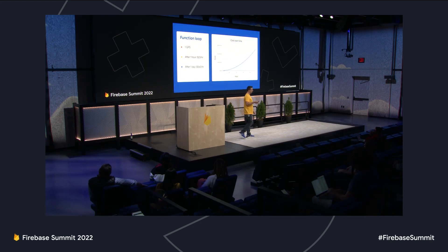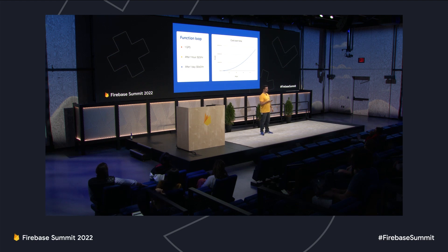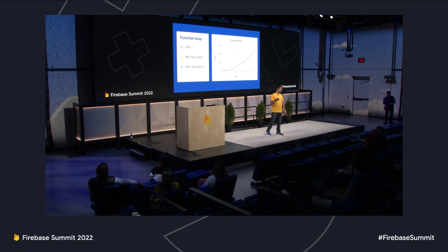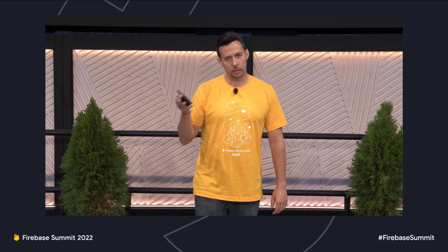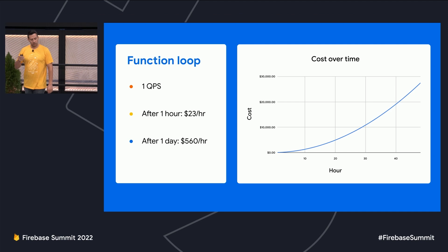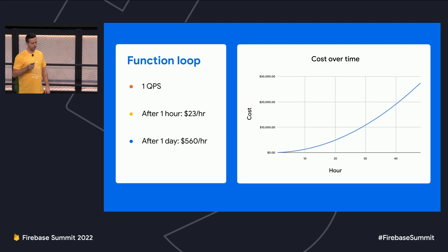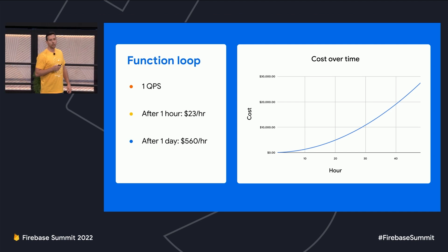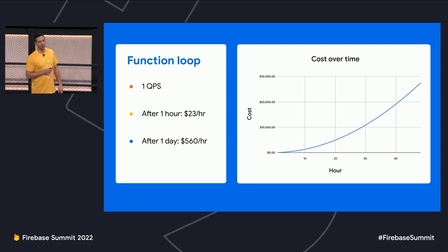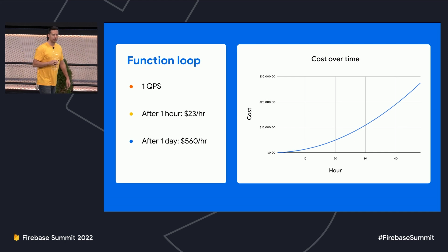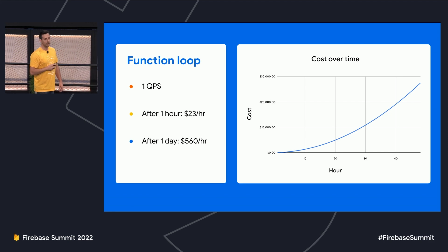To linger on this point a little longer — let's say we had one QPS of users adding items to their cart. That means we're introducing a new function loop roughly once per second, and let's say that function loop executes once a second. After about one hour, we're burning about $23 per hour in compute. After a whole day, we have about $560 per hour in compute. But we saved all of this by running our functions locally, testing locally, and vetting them before going to production.